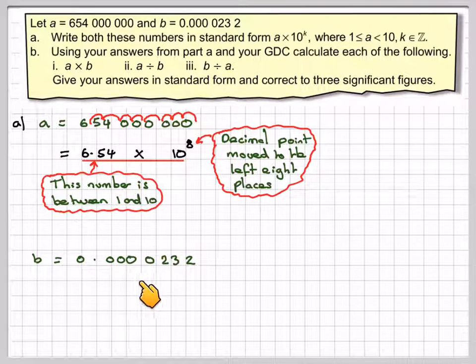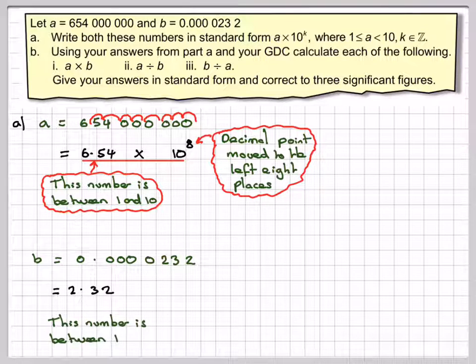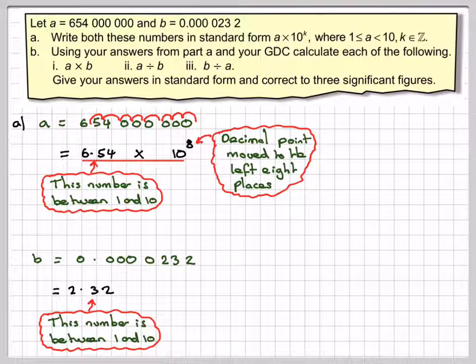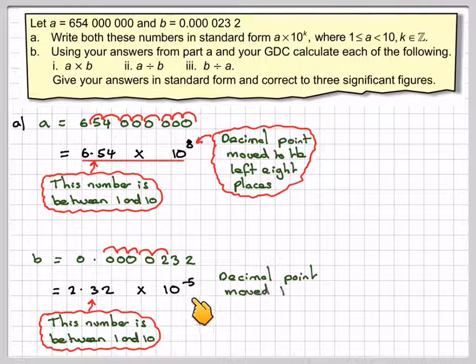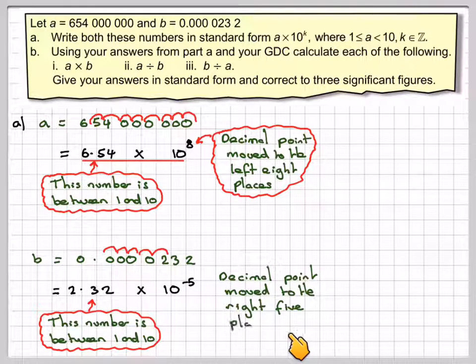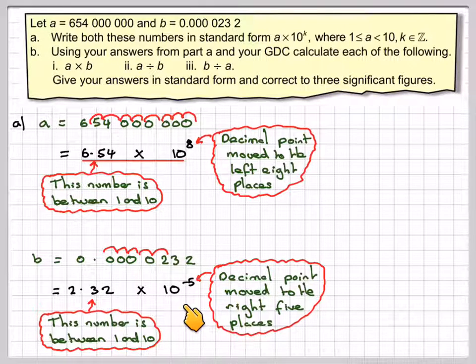Now let's look at the next one, 0.000232. In order to make this a number between 1 and 10, we need to write it as 2.32 times 10. And this time, how far have we moved the decimal point to the right? So it's 1, 2, 3, 4, 5. But because we've moved it this way, we need to say that it is minus 5. The decimal point moved to the right five places. It's like multiplying by 1 over 10,000. That's what this minus 5 means.